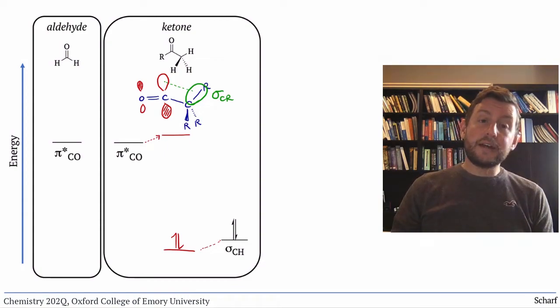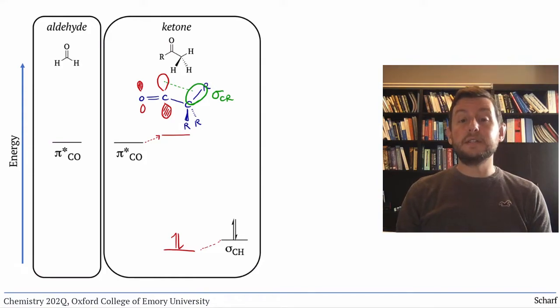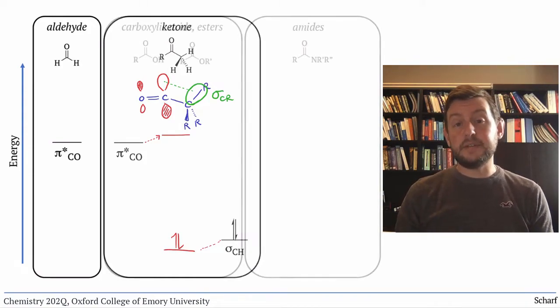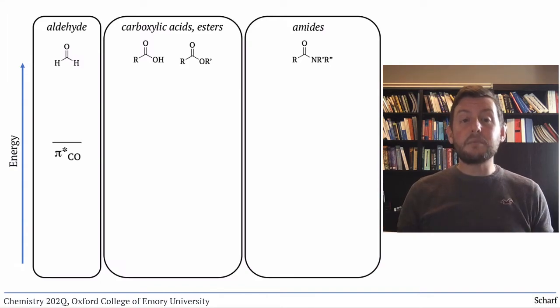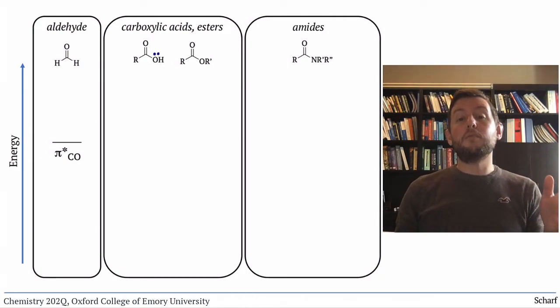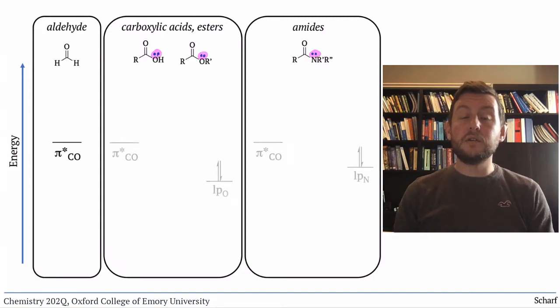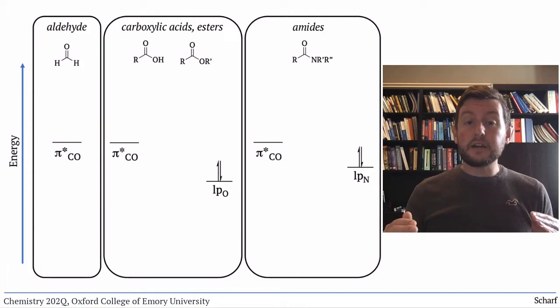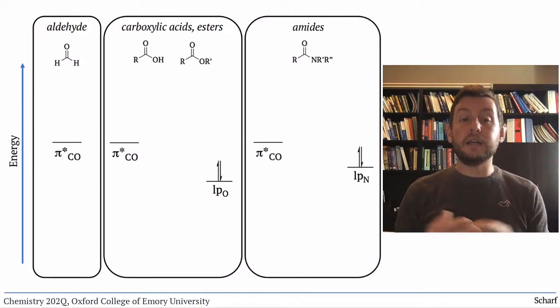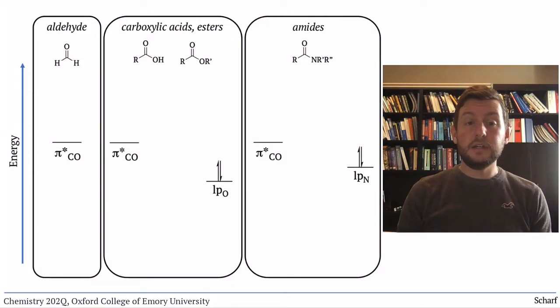A similar effect influences the electrophilicity of carboxylic acid derivatives. Let's take a look at carboxylic acids, esters, and amides all together. Next door to their CO pi star orbitals, they have lone pairs on oxygen or nitrogen. These are much higher in energy than the sigma bonding orbitals that we saw on the ketone, so they have a much more significant effect.